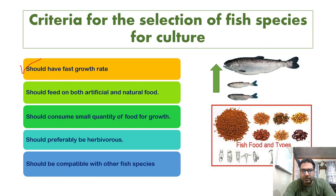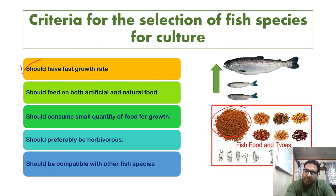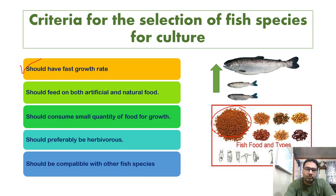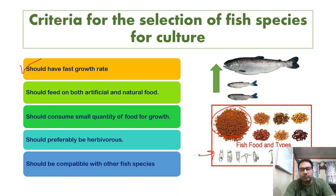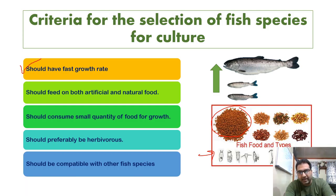The fish should be able to feed on both artificial and natural food. It should accept artificial feeds such as pelleted feed, crumbles, or micro pellets, as well as formulated feed. It should also be able to utilize live feed such as phytoplankton, zooplankton, rotifers, cladocerans, and cyclops. Phytoplankton includes various algae. The fish should be easy to feed.